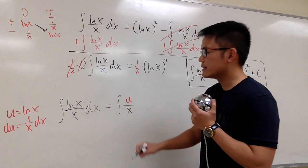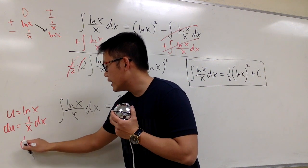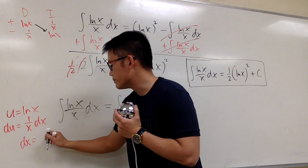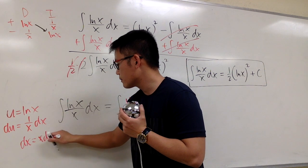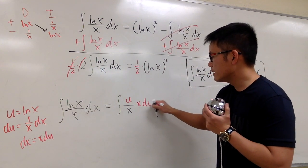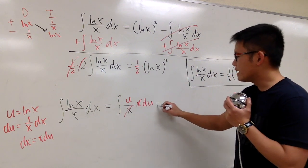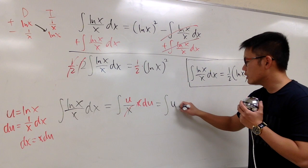We have the 1 over x. But the dx, let me multiply both sides by x on both sides here. We get dx equals to x du. And you see that x and x cancel out. All together, we're integrating u du.